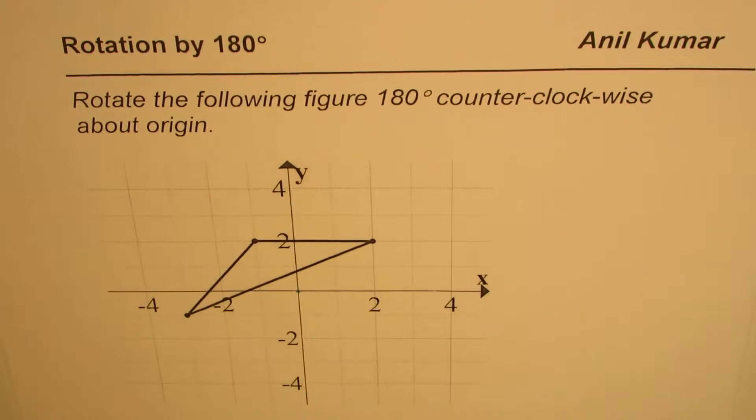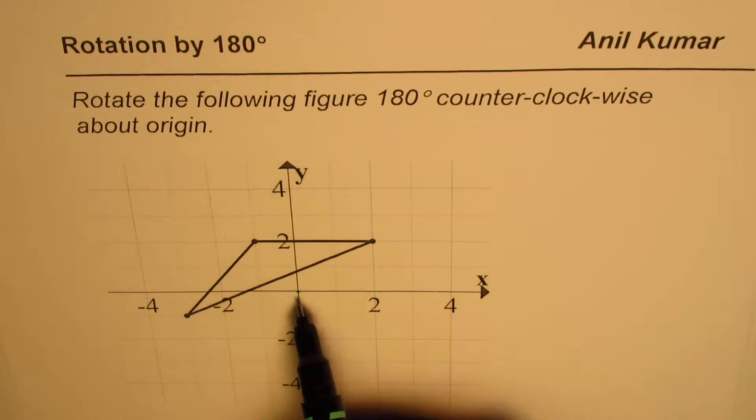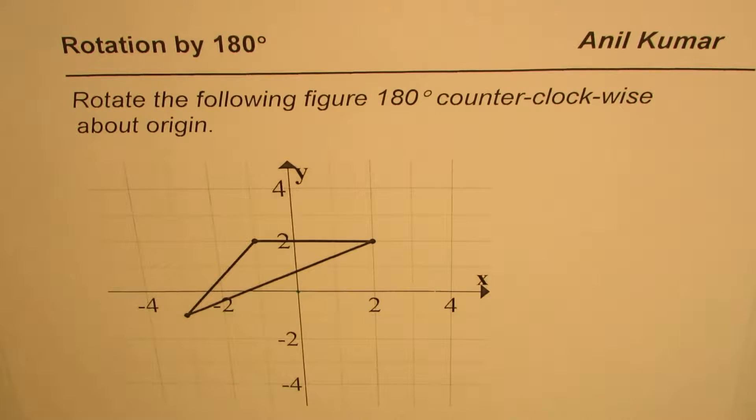So that is the origin and we have a triangle here. Three points are given. We will rotate this figure about origin by 180 degrees and then find the new or the image of this particular shape.